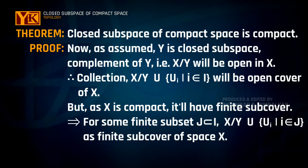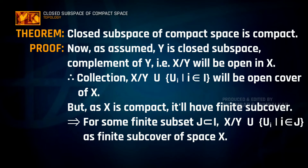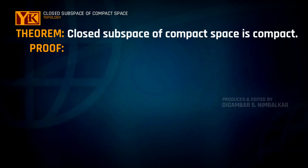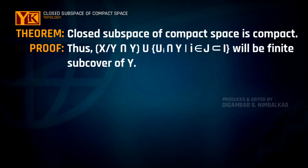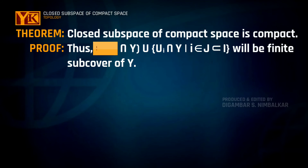Hence, for some finite subset J of indexing set I, we have X minus Y together with all Ui's such that i belongs to finite set J as a finite open cover of space X. Since these are open subsets of X, their intersection with Y will give us a finite subcover of space Y.